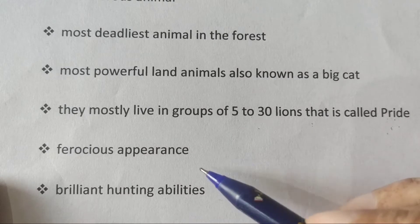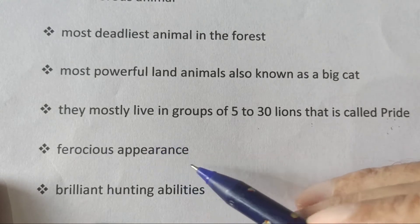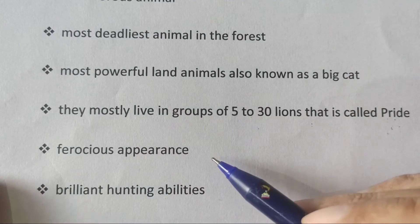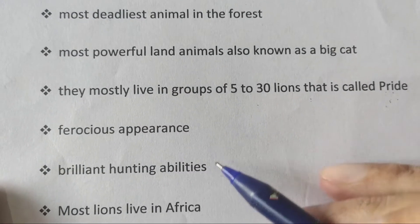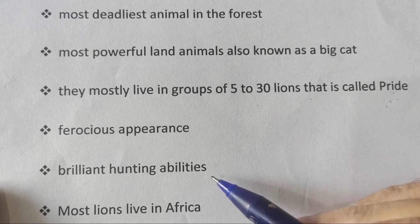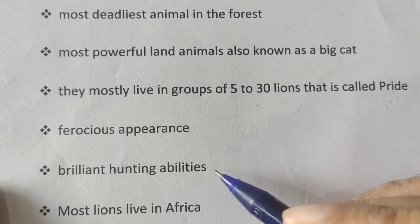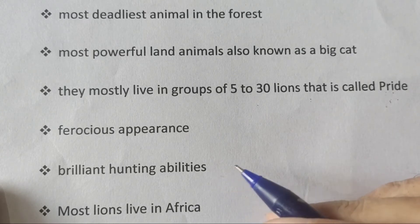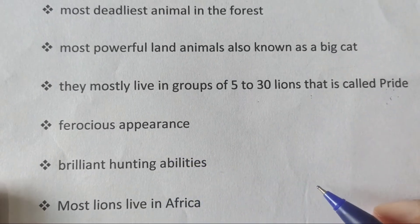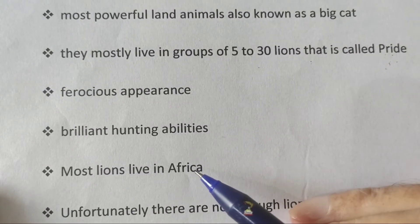You can also talk about their 'ferocious appearance' — ferocious means very dangerous-looking. Next, you can add 'brilliant hunting abilities,' meaning the lion's ability to hunt prey is exceptionally brilliant.